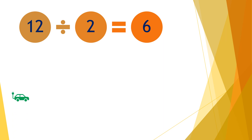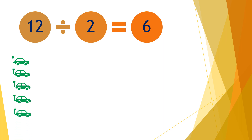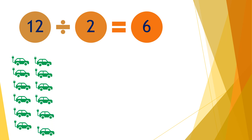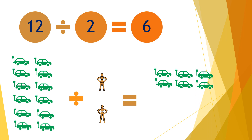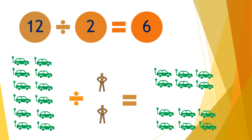Moving on to the next question: twelve divided by two equals six. So if we have twelve cars and divide them by two people, each person will receive six cars — one through six for each person.